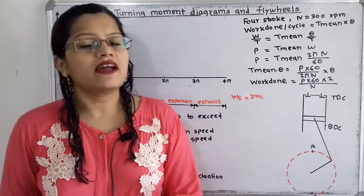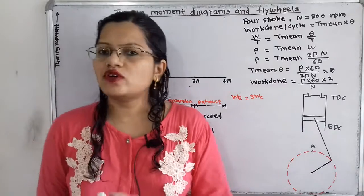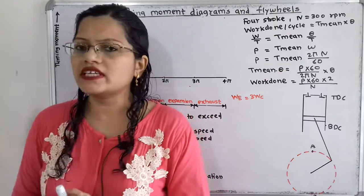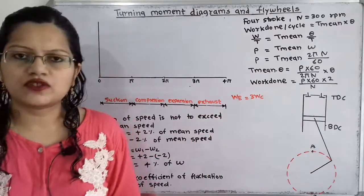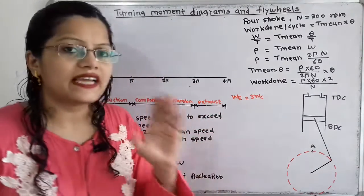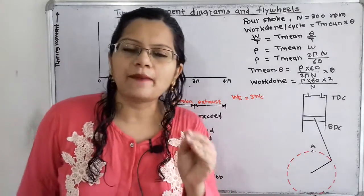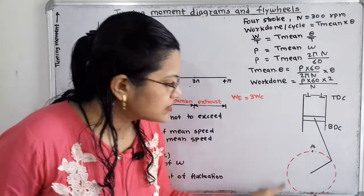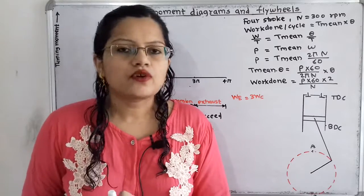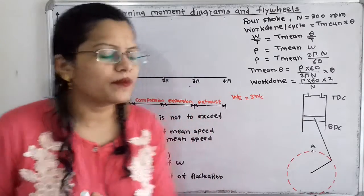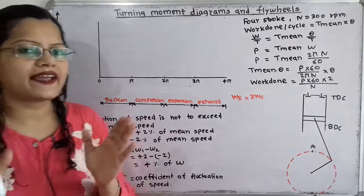Let us first understand how to draw the turning moment diagram from the working of the four-stroke engine. In the four-stroke engine, there are a total of four strokes. The first stroke is the suction stroke. Here we have the inlet valve and exhaust valve. When the piston moves from TDC to BDC, the crank moves from point A towards point B — that means half a revolution is completed, equal to 180 degrees or π radians. On the turning moment diagram, the vertical axis shows torque and the horizontal axis shows crank angle.